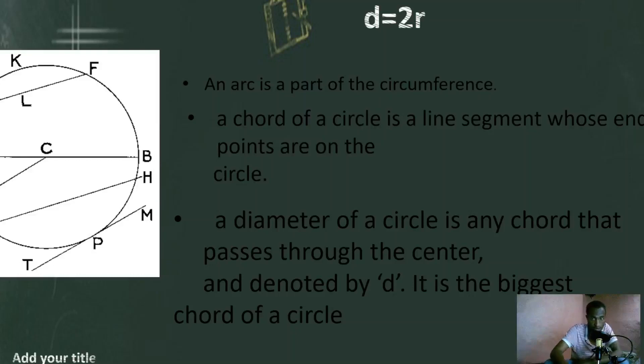The next one is the chord of the circle. Here we have E, F is the chord of the circle — E, F is the chord of the circle.